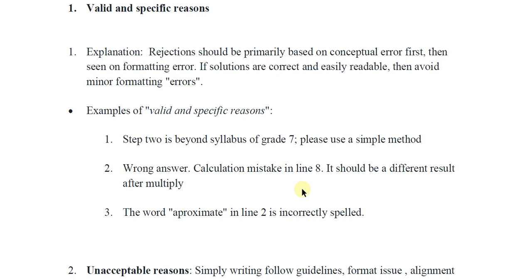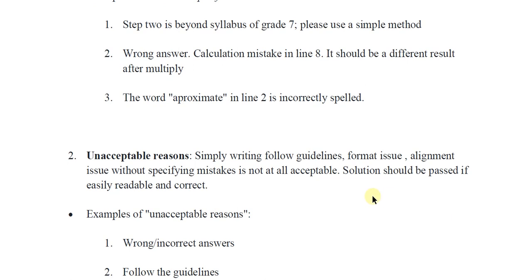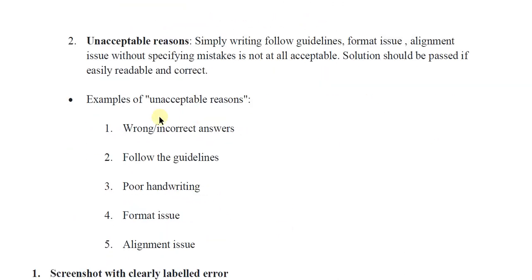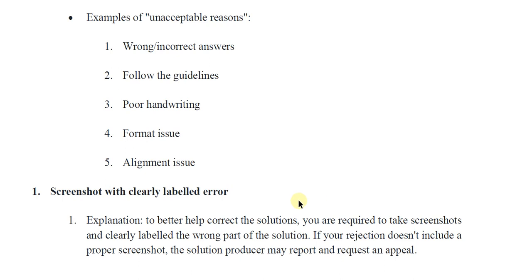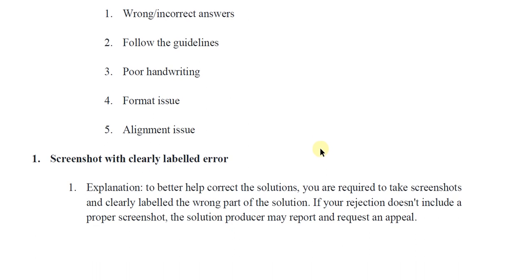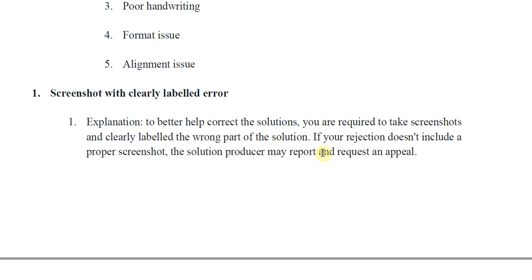Examples of valid and specific rejection reasons: 'Step two is beyond the syllabus of grade seven, please use a simpler method'; 'Wrong answer — calculation mistake in line eight, result should be different after multiplying'; or 'The word approximate in line two is incorrectly spelled.' Unacceptable rejection reasons include: simply writing 'wrong or incorrect answer,' 'follow the guidelines,' 'poor handwriting,' 'format issues,' or 'alignment issues' — these are totally unacceptable. Proper screenshots with correctly mentioned reasons are necessary, otherwise the solution provider may report and request an appeal to the referee.